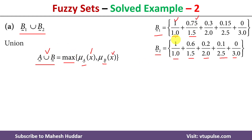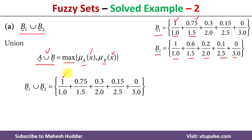Comparing the degree of membership of different elements: for element 1, the degree of membership is 1 in both sets, so in the union it is also 1. For element 1.5, the degree of membership is 0.75 in B1 and 0.6 in B2; the maximum between these two is 0.75, so 0.75 will be present in the union. We continue this calculation for all elements.